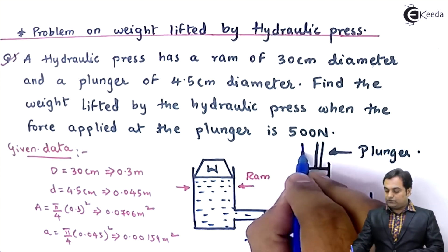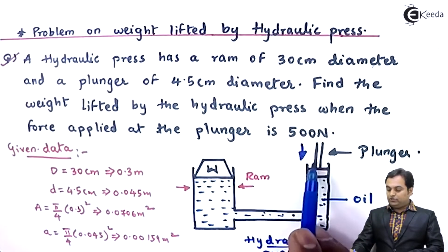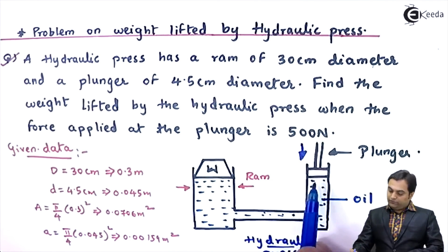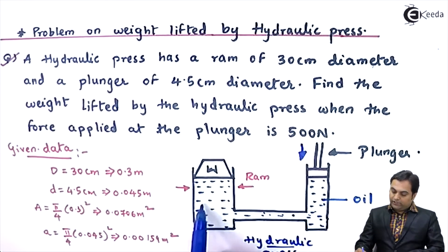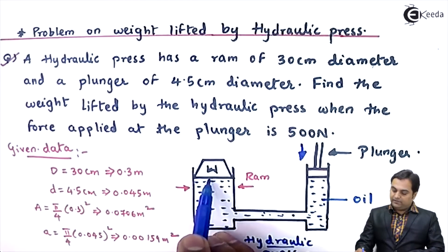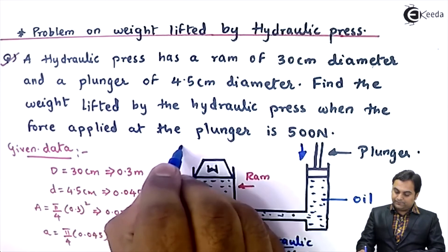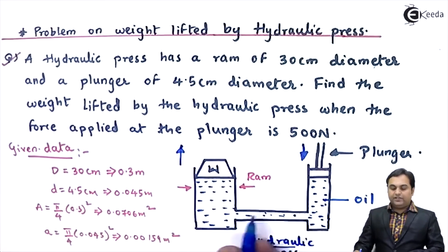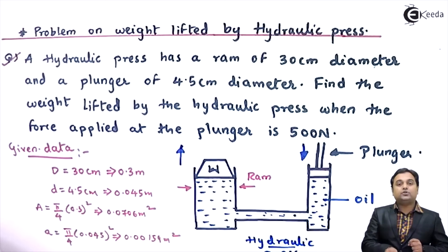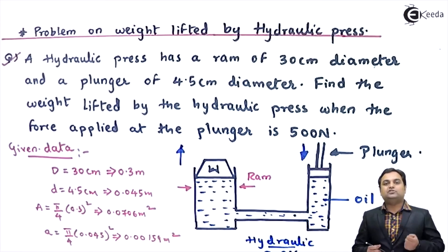When we apply a small force at the plunger, because of that force, the force is transmitted to this oil and through the oil it goes into the ram and then the load gets lifted. So this machine or hydraulic press works on the principle of Pascal's law.